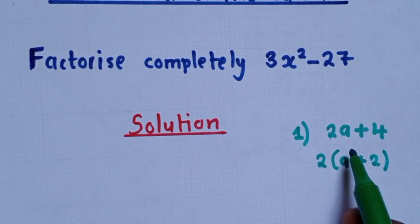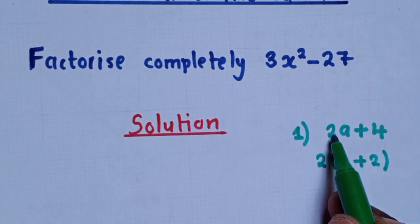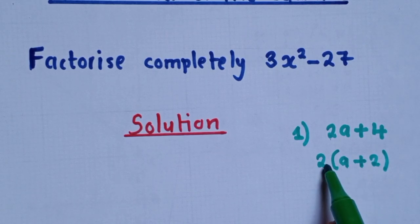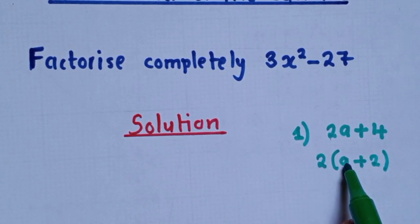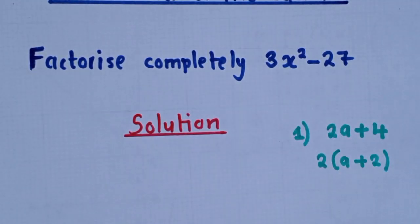This idea right here is very important. We need to know. We just factor out what is common. So 2 is common, we write it outside. And if you want, you can try by multiplying back. 2 times a, it's 2a. 2 times 2, it's 4. Like that. So we need this idea.